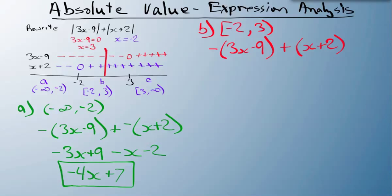Multiplying out and collecting like terms: minus 3x plus 9 plus x plus 2 equals minus 2x plus 11. So on this interval from minus 2 to 3, the equation is minus 2x plus 11.